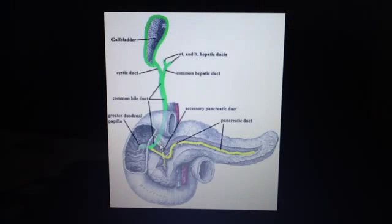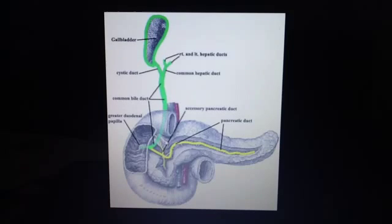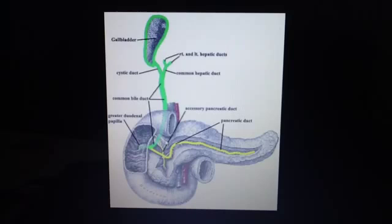The bile duct unites with the pancreatic duct to form a short dilated hepatopancreatic ampulla, which opens into the descending part of the duodenum at the summit of the major duodenal papilla. Sphincters are around these ducts and they control the flow of bile and pancreatic juice into the duodenum.